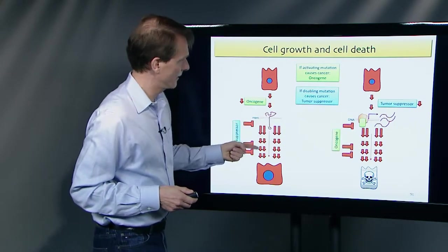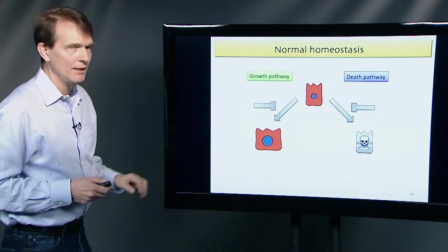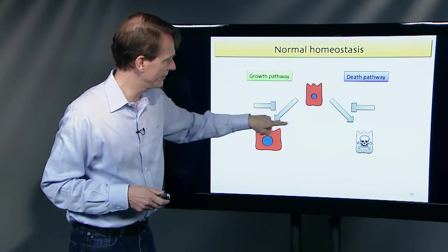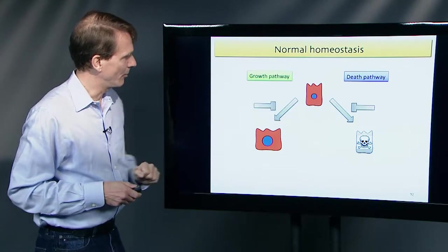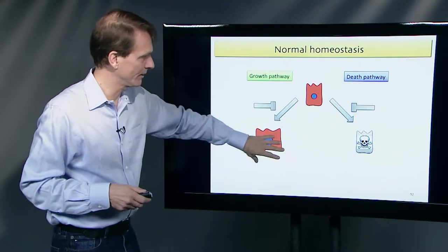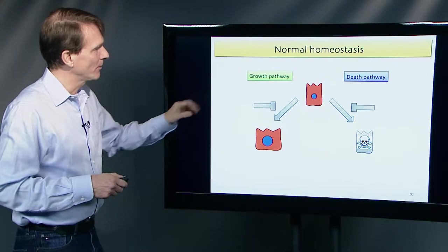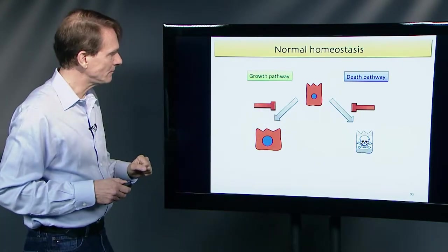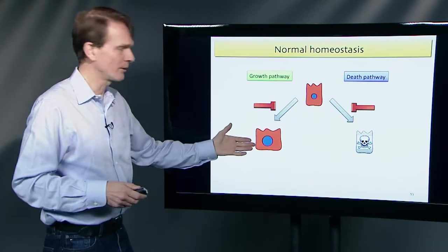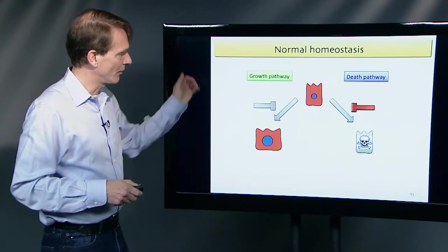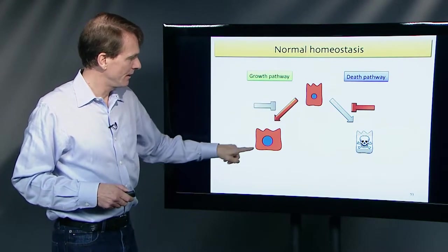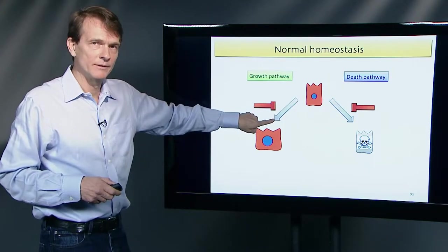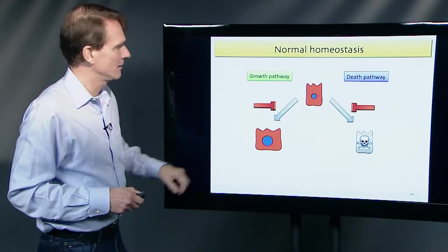In normal homeostasis, the repressors are on, and there is no signaling because you don't want cell death or unregulated growth under normal circumstances. When a growth signal arrives, it releases repression, activates the pathway, and the cell can grow. When division is done, the repressor comes back on, the activator goes off, and you return to normal. That's how it's normally supposed to happen.